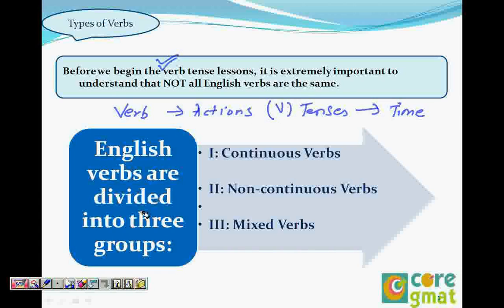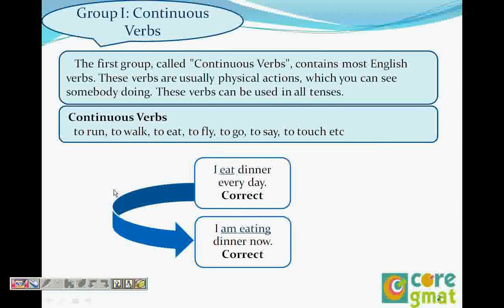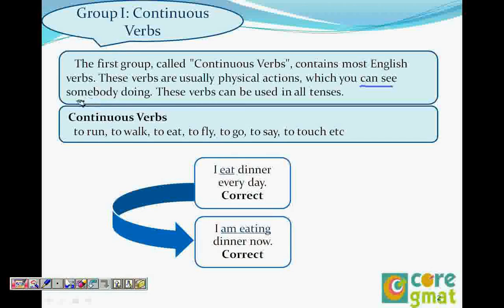Before we go to the verb tenses, we will understand the types of verbs. We have three types of verbs: continuous verbs, non-continuous, and mixed verbs. Continuous verbs are those verbs with which you can use -ing. These are the physical actions — actions that you can see people doing. For example: to run, to walk, to eat, to fly, to say, to touch, etc. These are all physical actions which you can actually see, and they are continuous verbs.